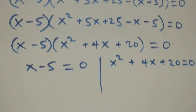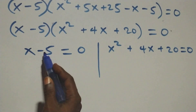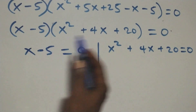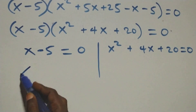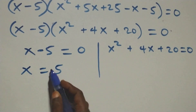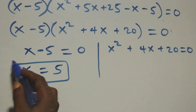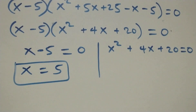Taking x minus 5 equals to 0, we move minus 5 to become plus 5, so x equals to 5, which is a real solution.